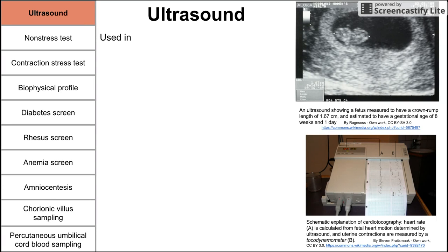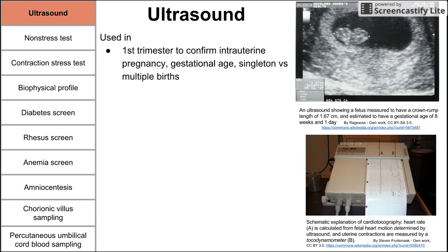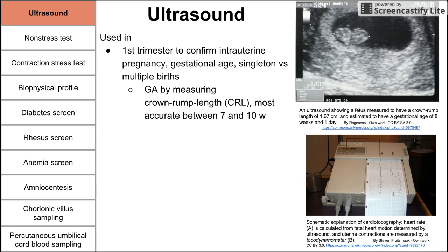Ultrasound is a rather old and well-tested technique. It's used in the first trimester to confirm intrauterine pregnancy, as opposed to an ectopic pregnancy or a molar pregnancy. It can also be used in the first trimester to determine gestational age and to see if you have a singleton or multiple births — meaning twins or triplets. Ultrasound can measure the crown-rump length, also called CRL.